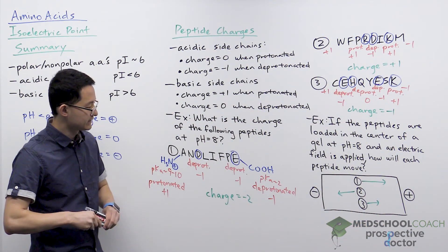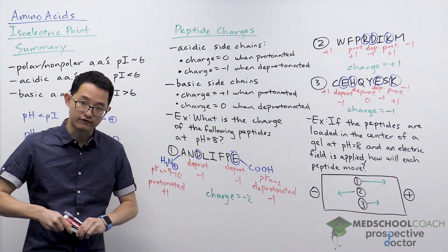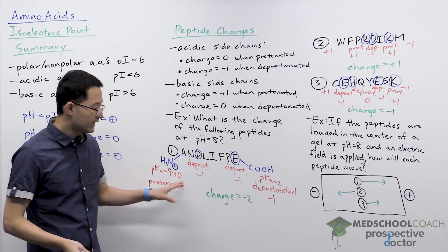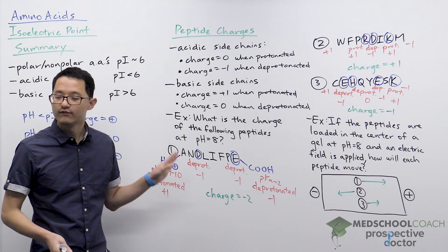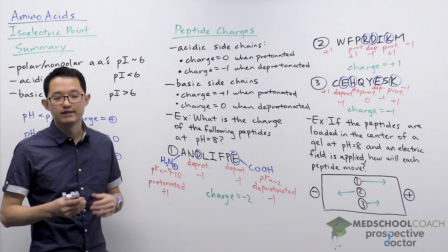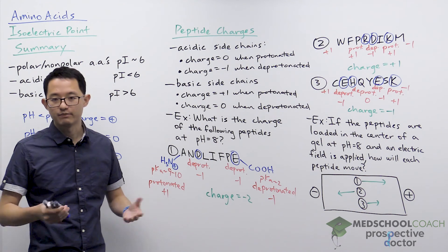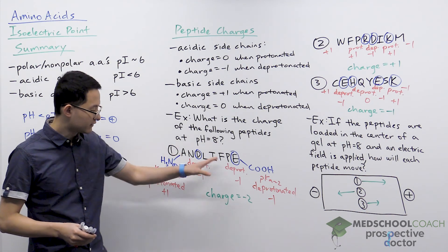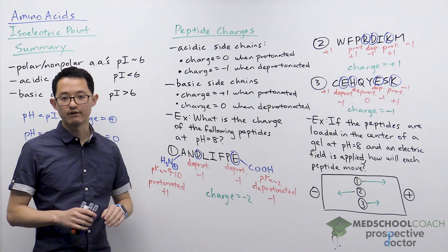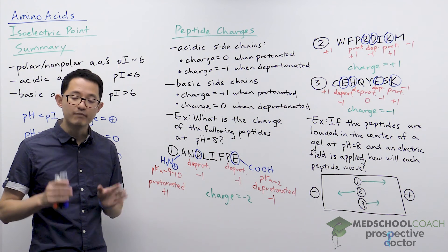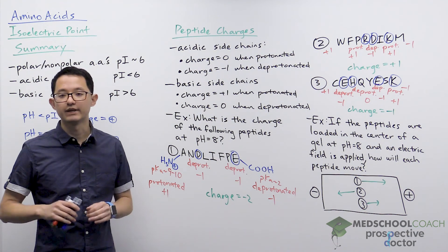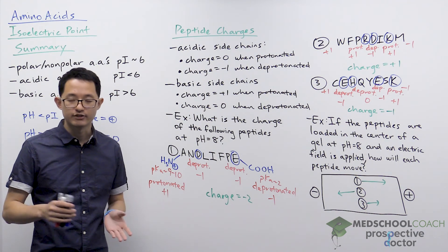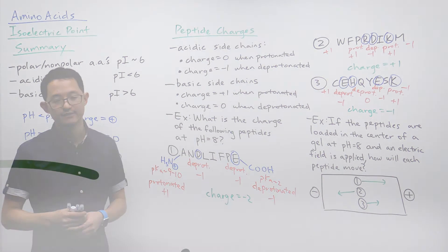That is gel electrophoresis. To determine a peptide's charge at different pH values, focus on the acidic and basic amino acids, make sure you know your pKa values, and be able to relate pH to pKa.